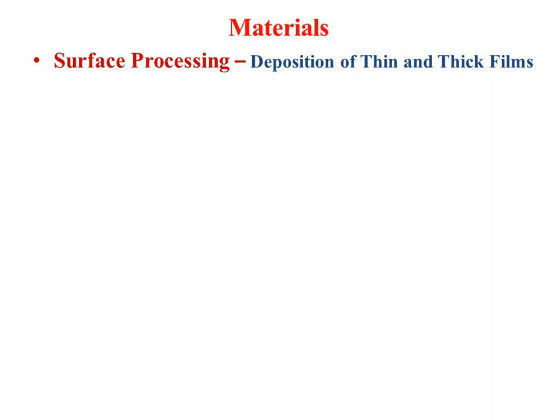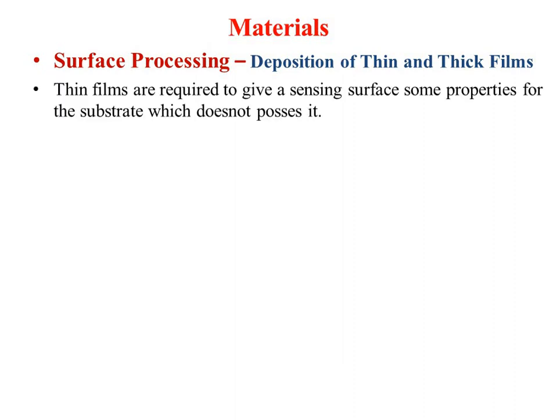Most of the time, the material used as a substrate is not capable of having the sensing characteristics on its own. For example, silicon does not exhibit the piezoelectric effect. So to have this piezoelectric effect, you have to deposit a film on the surface of that silicon material. Thin films are required to give the sensing surface some properties that the substrate does not possess.